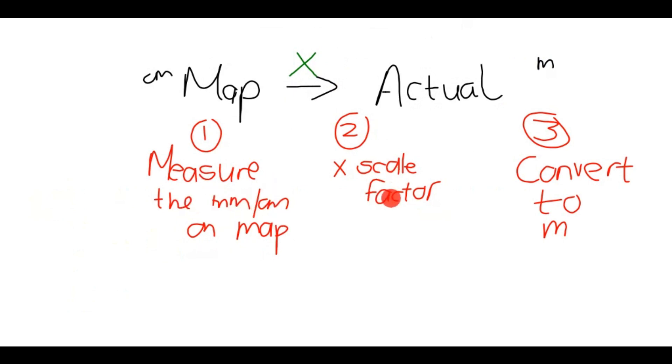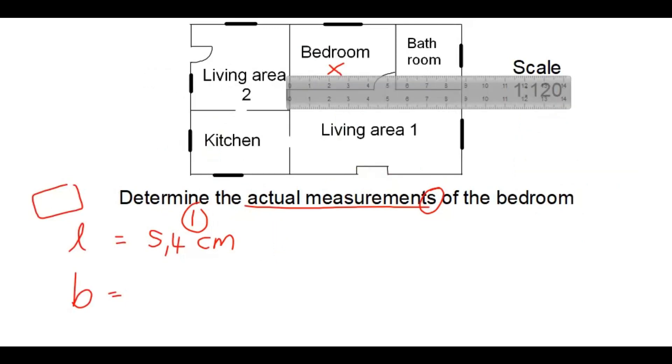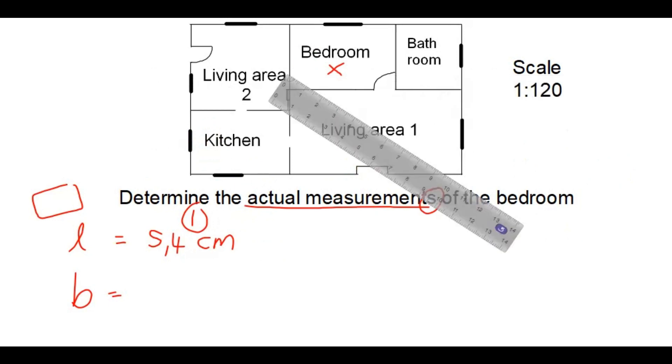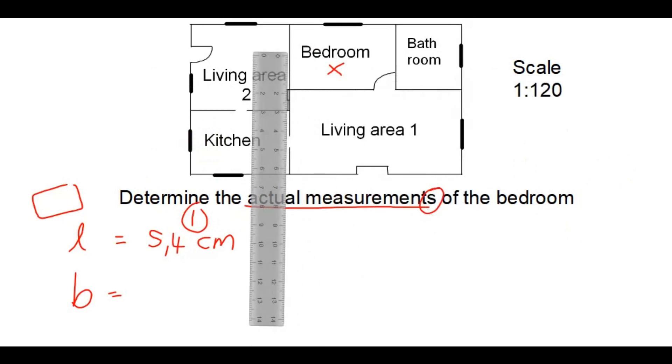Going from the map to the actual distance, measure the millimeters or centimeters. Then we times by the scale factor, then we convert it to meters. So now let's also measure the width quickly of this room. If I put it on there and I look at that exact measurement, it's 3.5, so 3.5 centimeters.